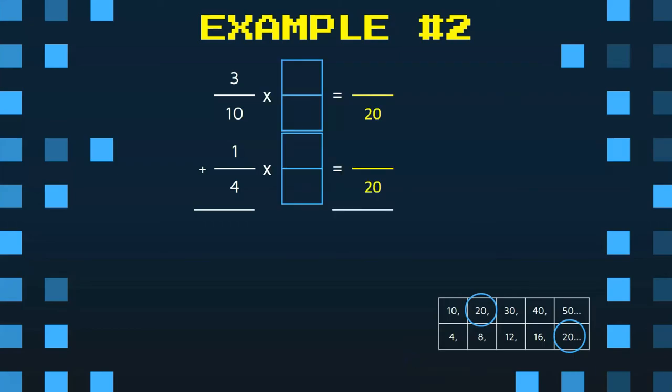So we're now going to set up equivalent fractions using big giant ones. 20 is now my new denominator. 10 times 2 is 20. 4 times 5 is 20. 3 times 2 is 6. 1 times 5 is 5.